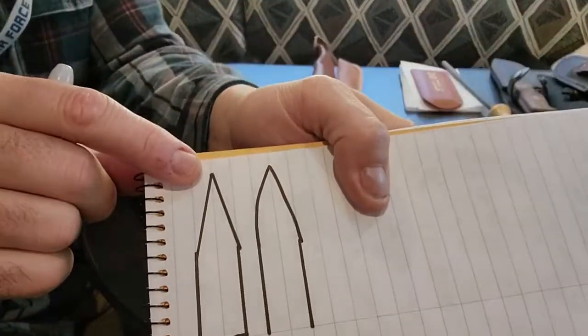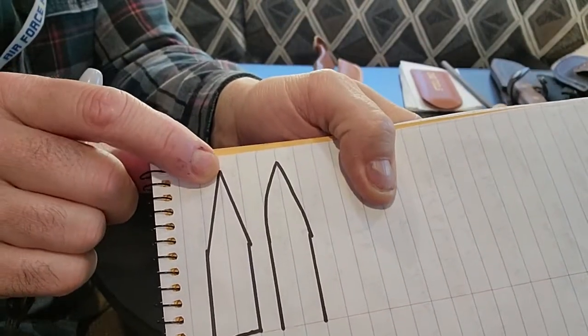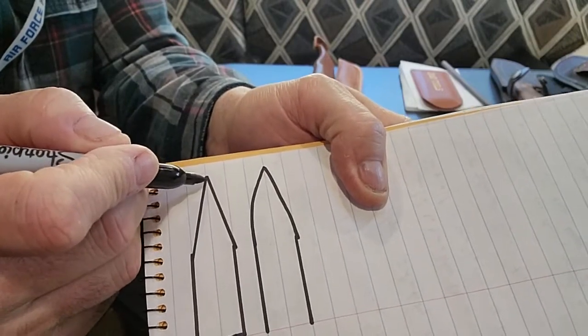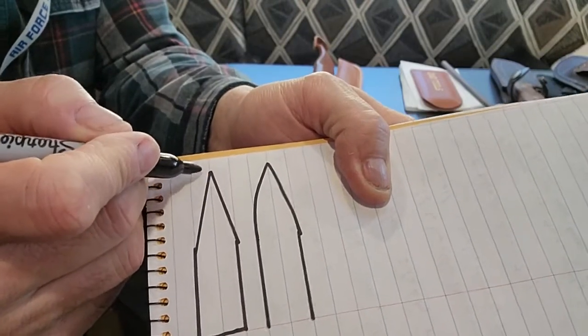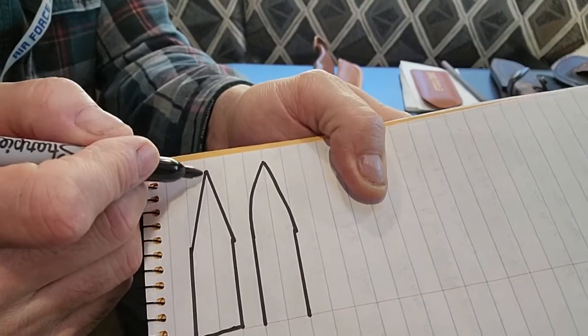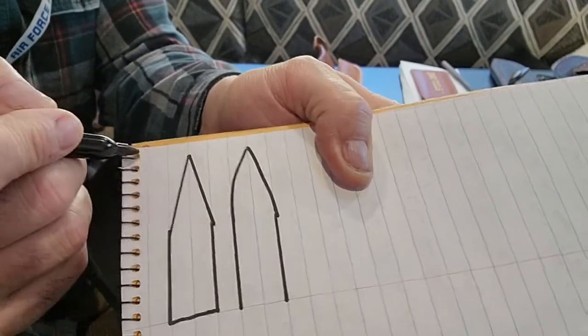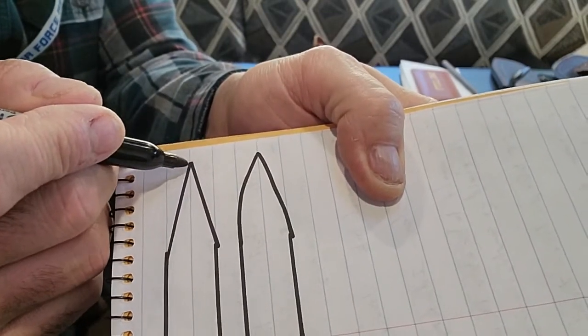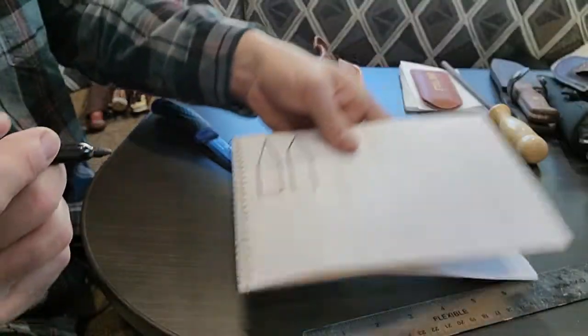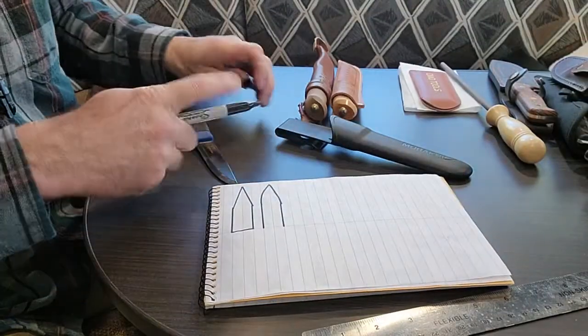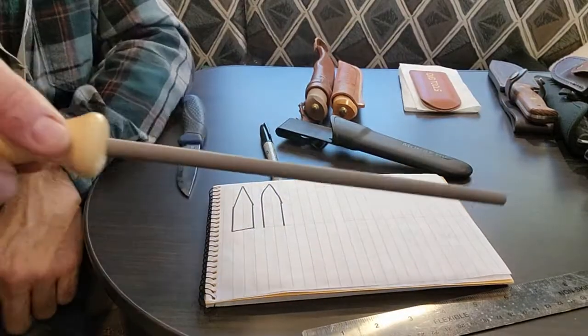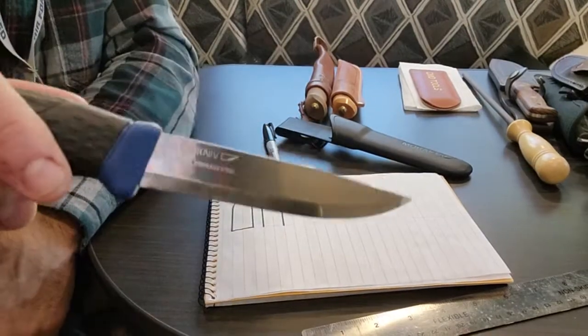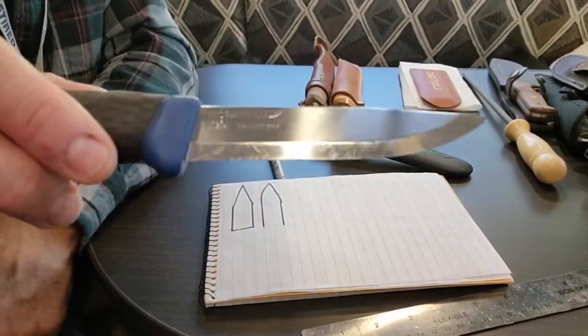What that is real quick, on the top of this edge instead of coming to a complete zero point, you just make a little secondary bevel on that. Just go bloop bloop, just a tiny little extra bevel. That'll give it some extra strength. You can do that ever so slightly sometimes just with a few swipes of a ceramic rod.